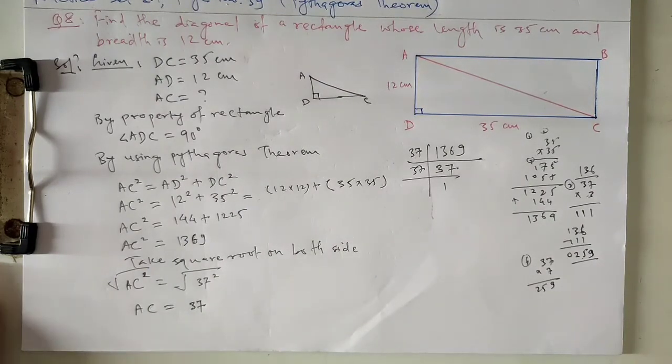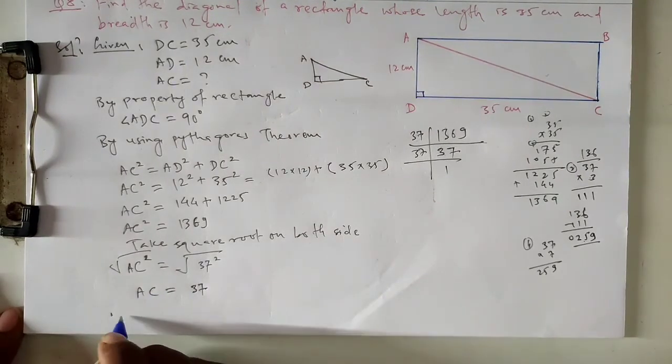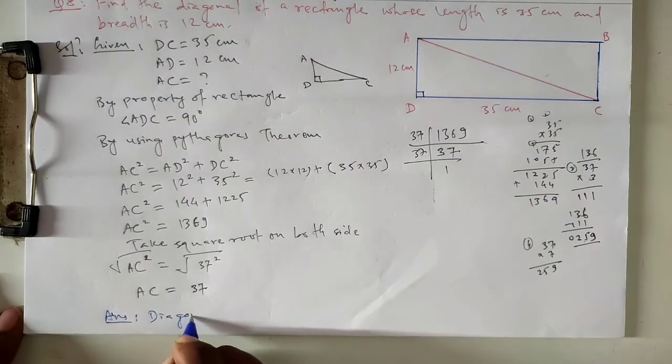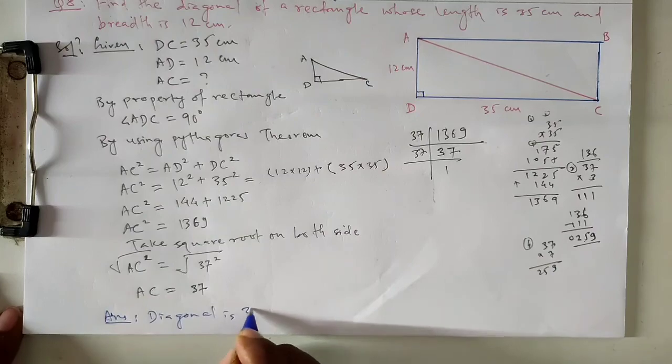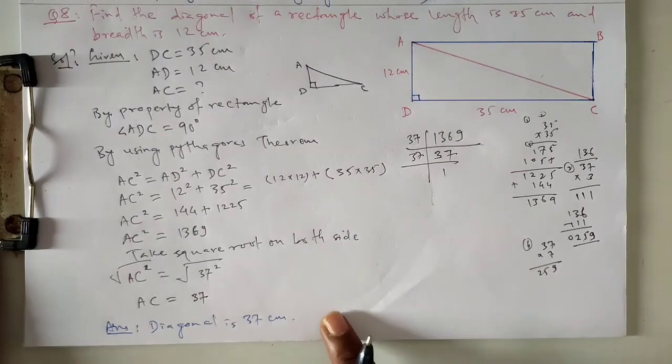So this is our answer. The diagonal is 37 cm. Question number 8 complete, see you in the next video.